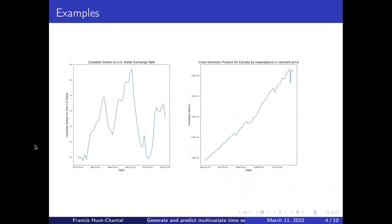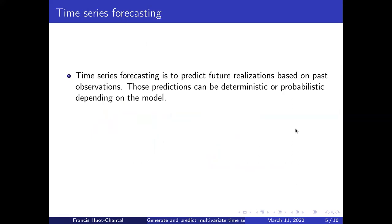Another example would be here to the left, the Canadian to US dollar exchange rate. It fluctuates through time with no clear trend. Unlike on the right side here, the gross domestic product of Canada since 1961, which is clearly upward trending. And given those data, we could try to predict future values. For example, we observe those values and we can try to predict the exchange rate of next year, let's say 2023. This would be an example of time series forecasting, which is the subject of today's presentation.